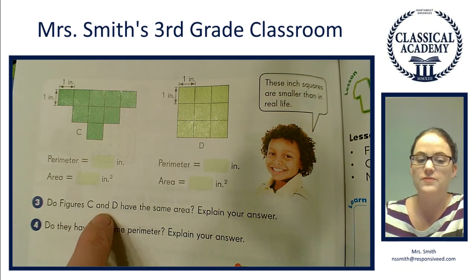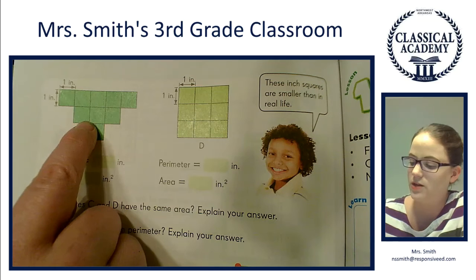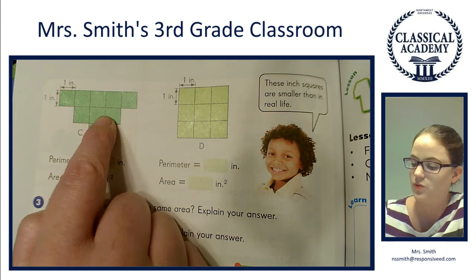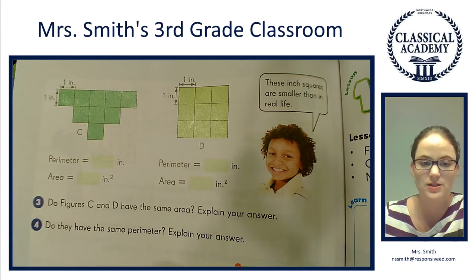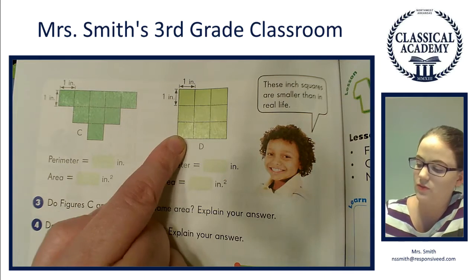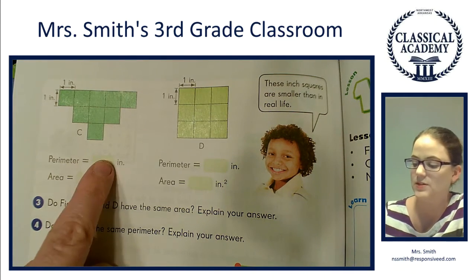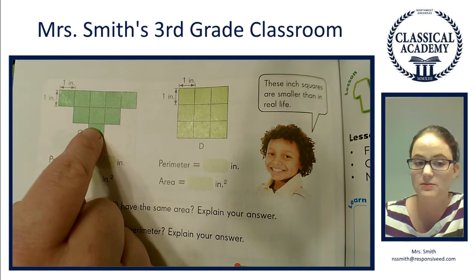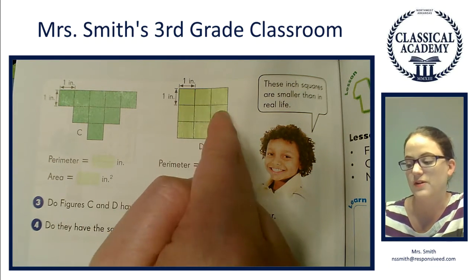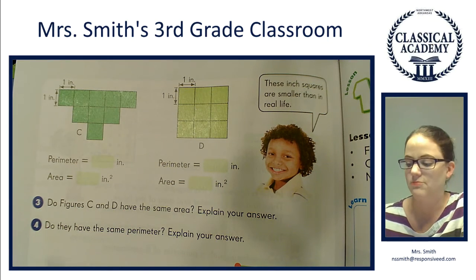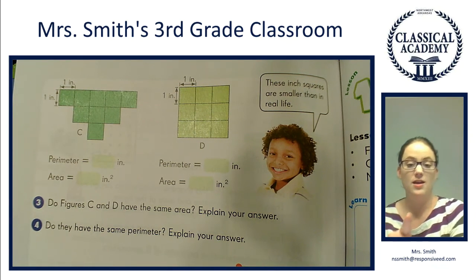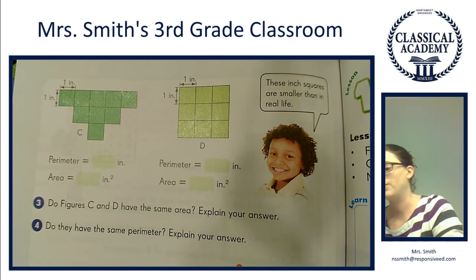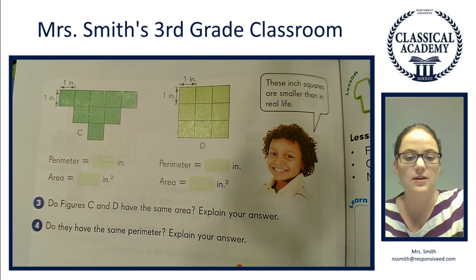All right, the perimeter of C is 1, 2, 3, 4, 5, plus 5 more, 10, 11, 12, 13, 14, 15, 16. The perimeter is 16. The area is 1, 2, 3, 4, 5, 6, 7, 8, 9 - area is 9. For D: 1, 2, 3, 4, 5, 6, 7, 8, 9 - the area is 9. Do figures C and D have the same area? Yes. Do they have the same perimeter? Nope.